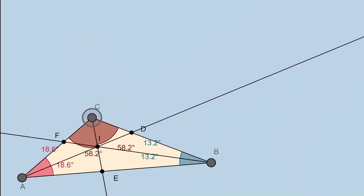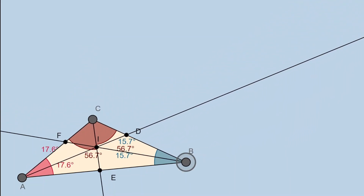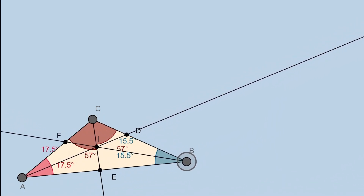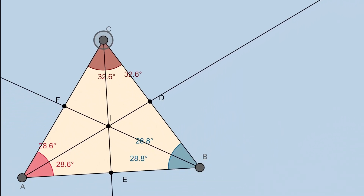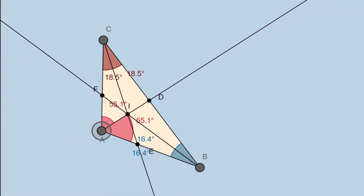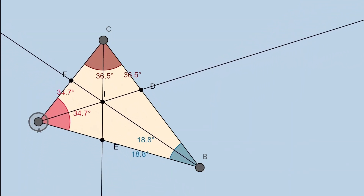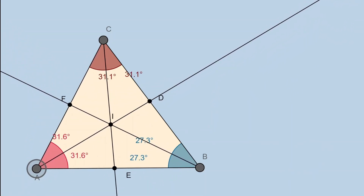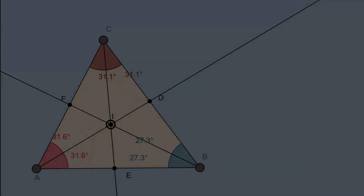It doesn't matter how small my triangle is, or how big my triangle is, or even the shape of our triangle. One thing that always stays true is that the intersection always happens inside the triangle.